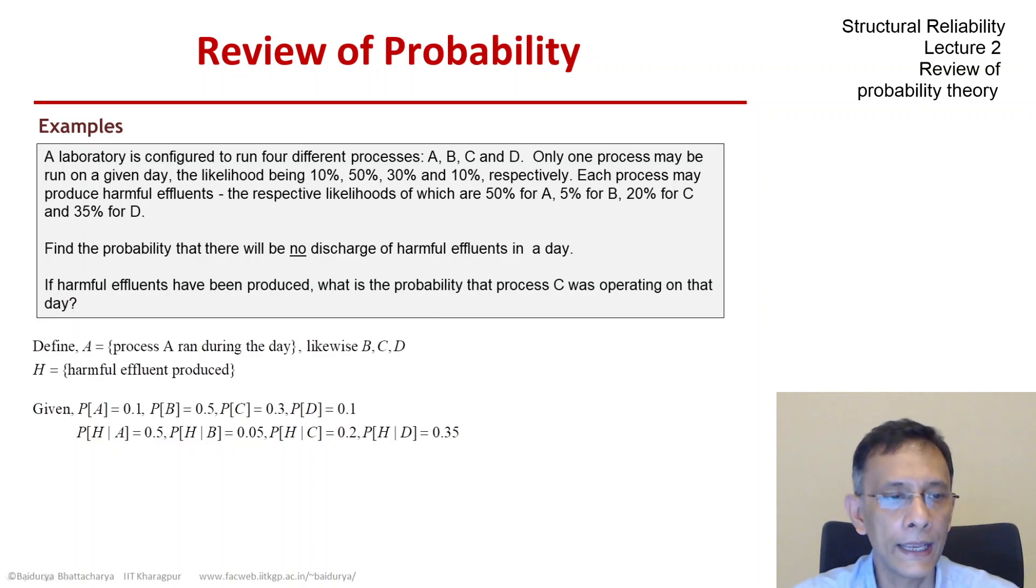The probabilities of A, B, C and D respectively 0.1, 0.5, 0.3 and again 0.1 and this would be our partition.